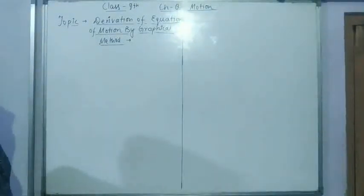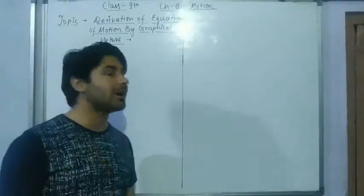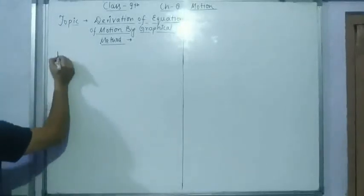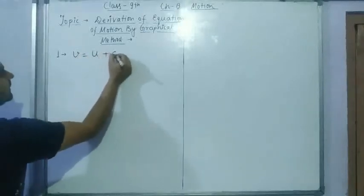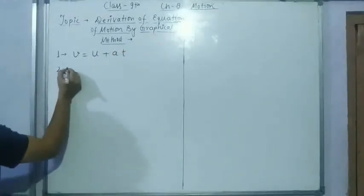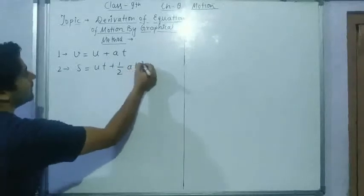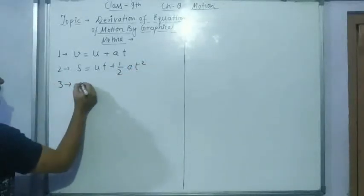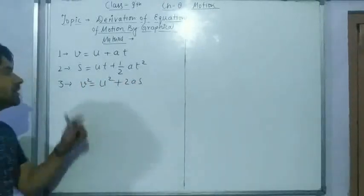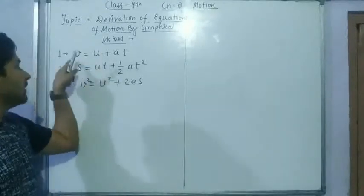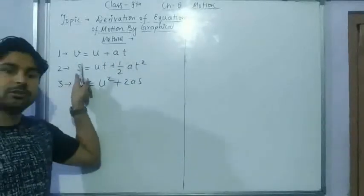इसके लिए हम graph plot करेंगे और graph का reference लेके तीन equation of motion जो हमारी होती है, उनको हम derive करेंगे। कौन-कौन सी होती है? First equation: V = U + AT. Second equation: S = UT + ½AT². Third equation: V² = U² + 2AS. जहाँ U initial velocity, V final velocity, A acceleration, T time, और S distance or displacement होता है।